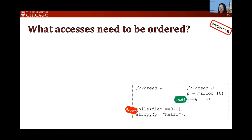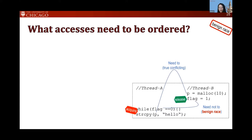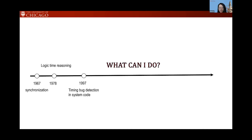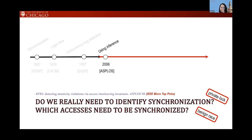The second issue Eraser mentioned is benign races. This goes back to knowing which operations are semantically conflicting. In one example, both threads access a flag without synchronization — but that's not actually a bug, because the flag accesses don't need to be ordered. However, the malloc assignment to P and the read of P do need to be ordered. So to correctly detect bugs, we need to know what races are benign and what races are real.